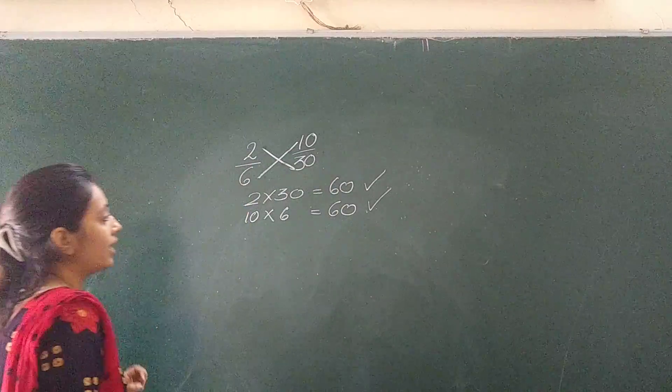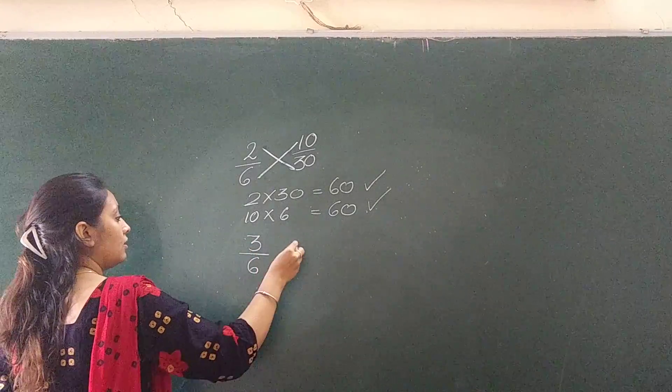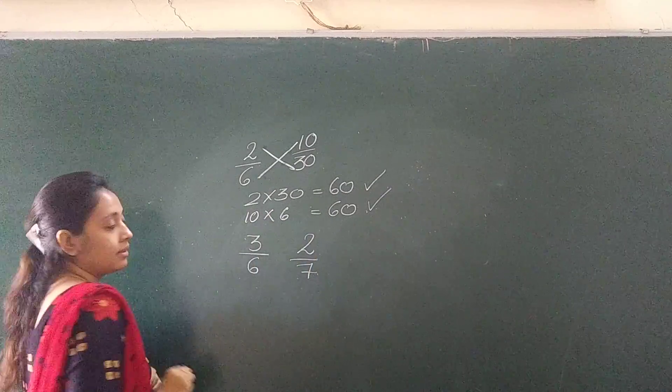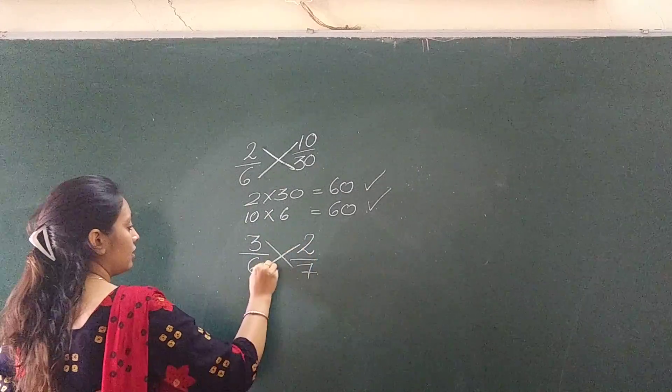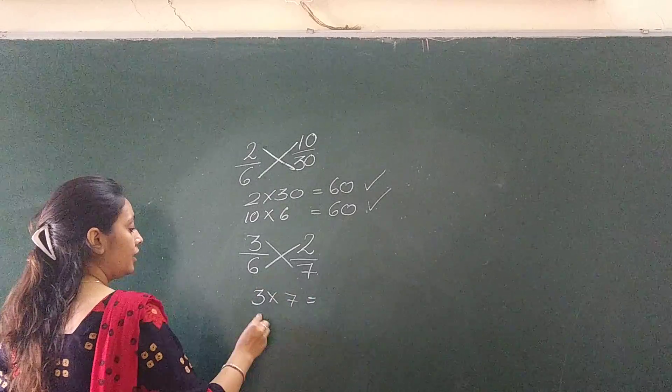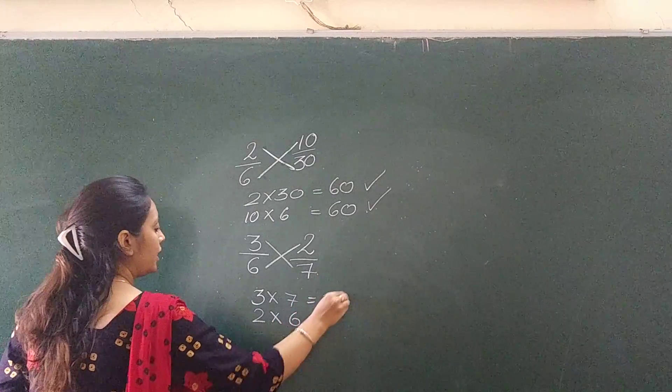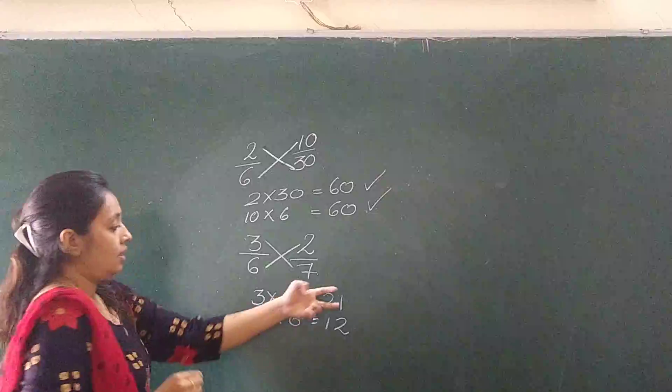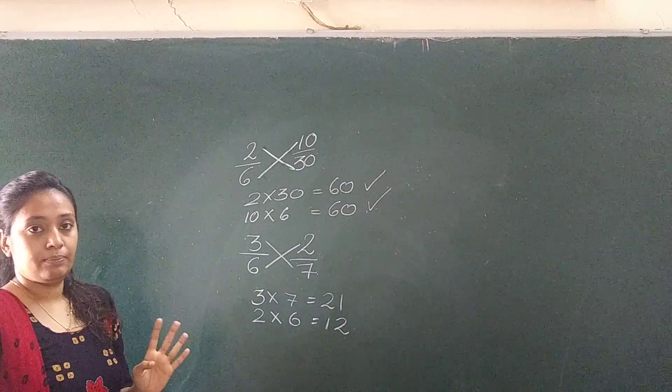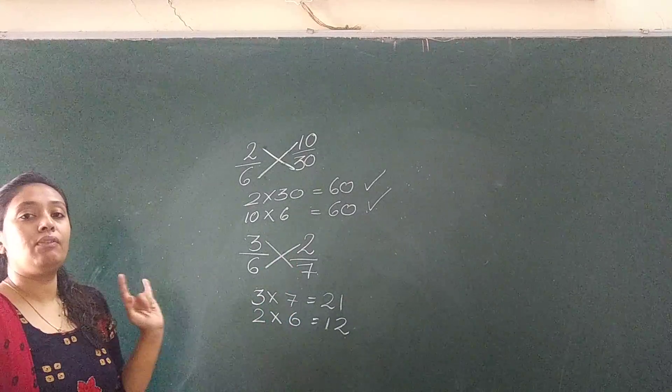Another example: what you need to do is cross multiply. 3 with 7, and 2 multiplied by 6. 21 and 12. Now see, both the answers are different. Products are different. So these fractions are not equivalent.